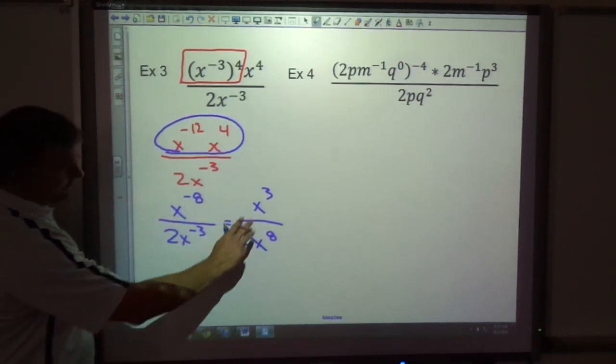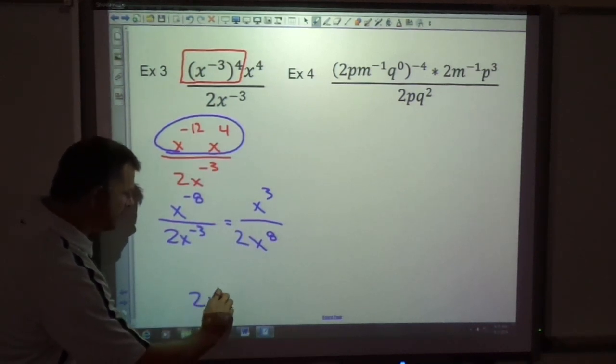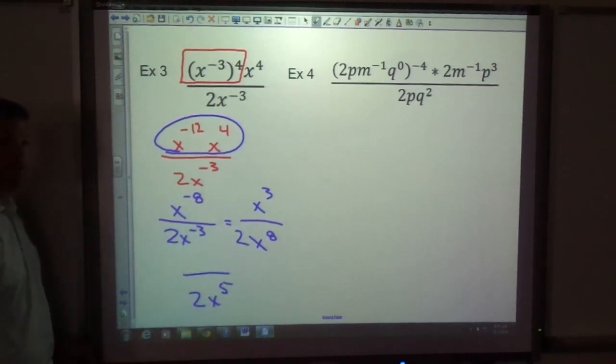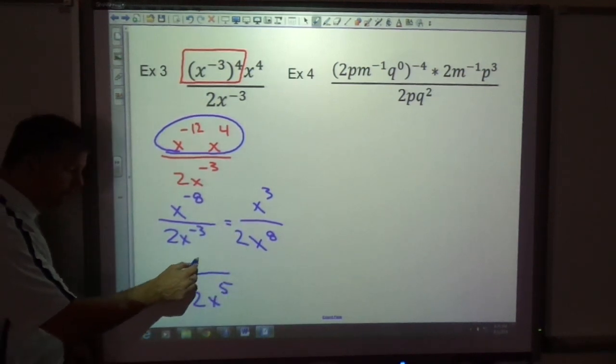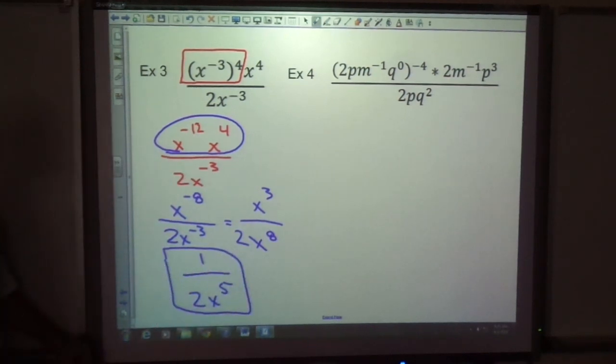So now, divide. 3 of these cancel with 3 of these, leaving me 5 x's in the bottom. And when there's nothing left in the top, remember to always write a 1. So 1 over 2x to the 5th.